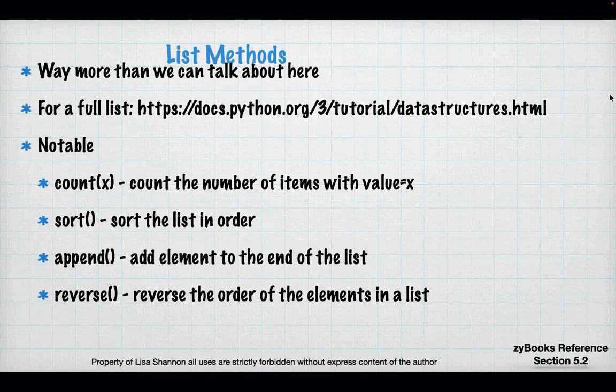We can talk about list methods for an entire hour, but some notable ones you'll need for labs this week: 'count' counts items in a list with a given value; 'sort' sorts a list alphabetically; 'append' adds an element to the end; and 'reverse' does a reverse sort order. You'll have to use both sort and reverse in one lab, and count in another.